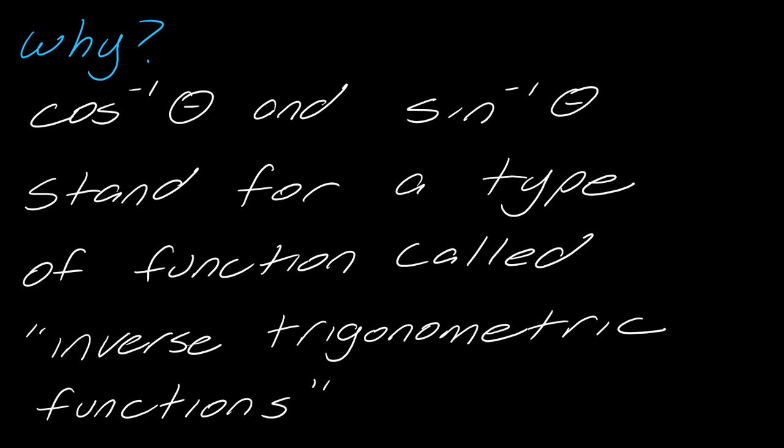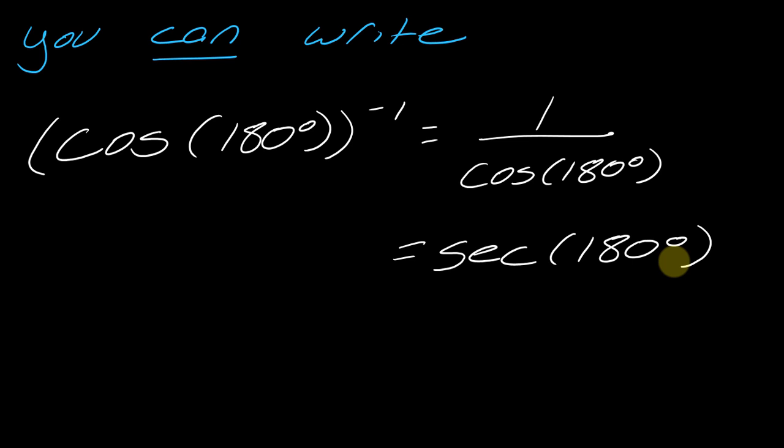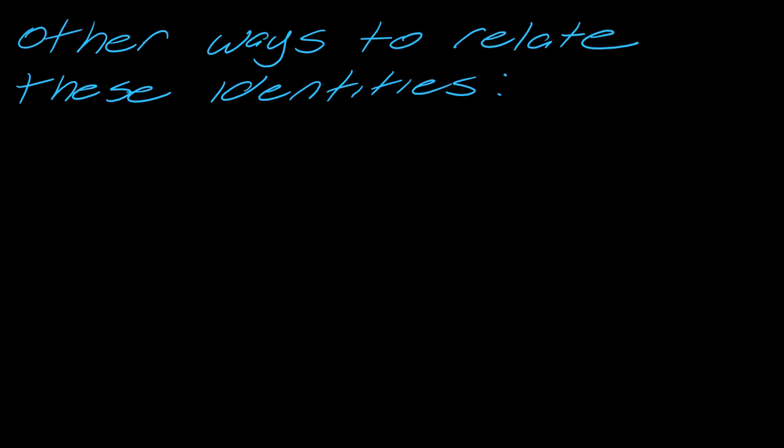What you can do—I don't usually see this that often—but you can write the reciprocal out like this. So what this would mean is one over cosine of 180 degrees, and then I would know that's equivalent to secant of 180 degrees. Most times, probably 99% of the time, everybody's gonna just write either secant or cosine, and you kind of just know that.